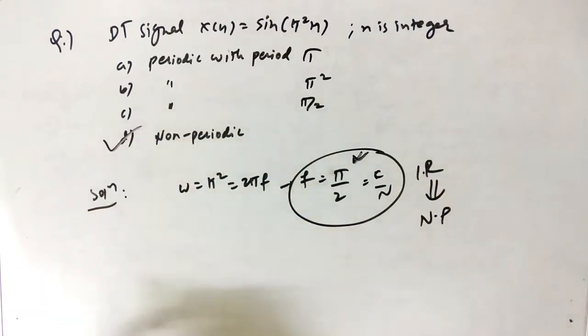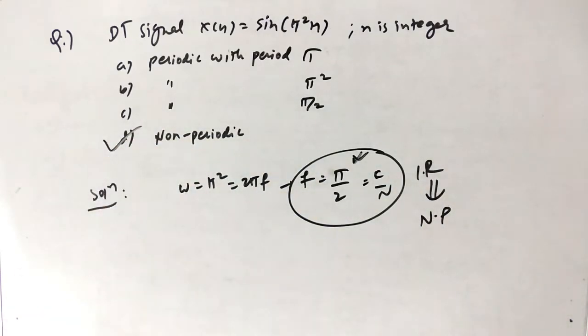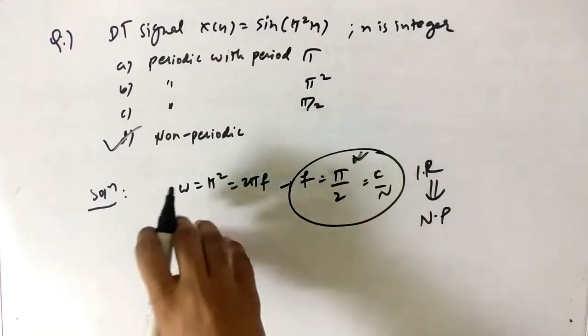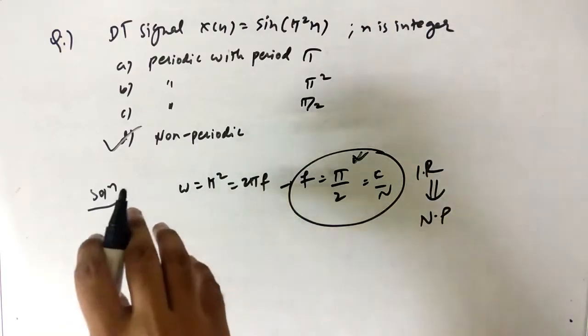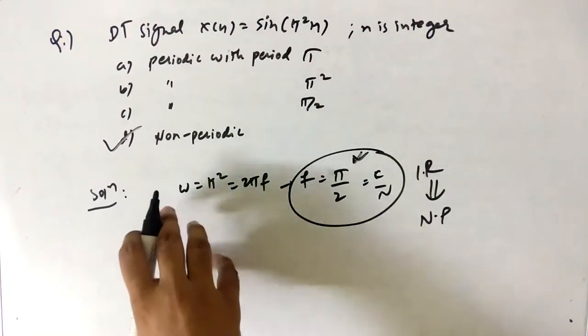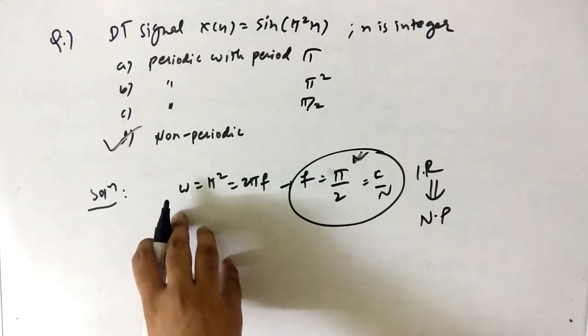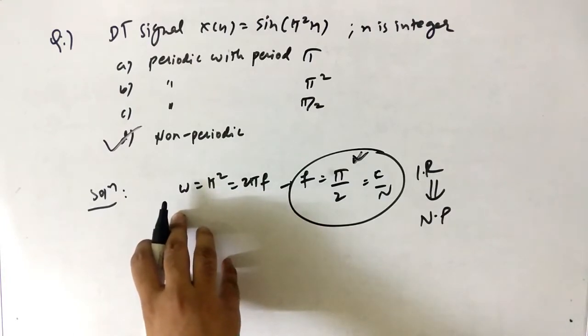The ratio k/N equals π/2, which is irrational because π is present. Since the ratio is irrational, the signal is non-periodic. The answer is (d). These are straightforward GATE questions if you know the steps, formulas, and tricks.